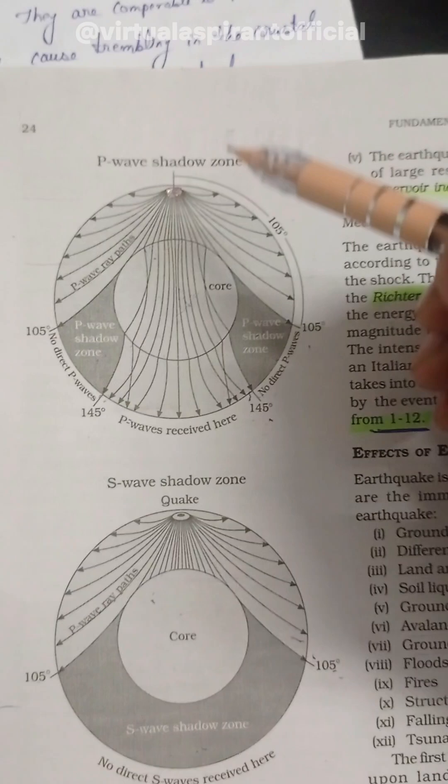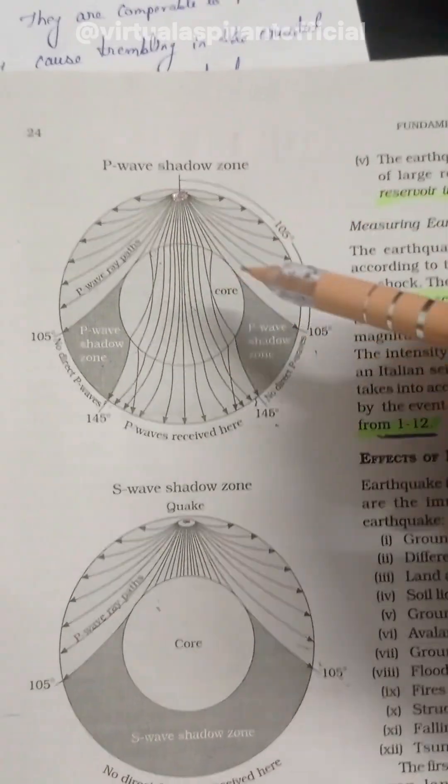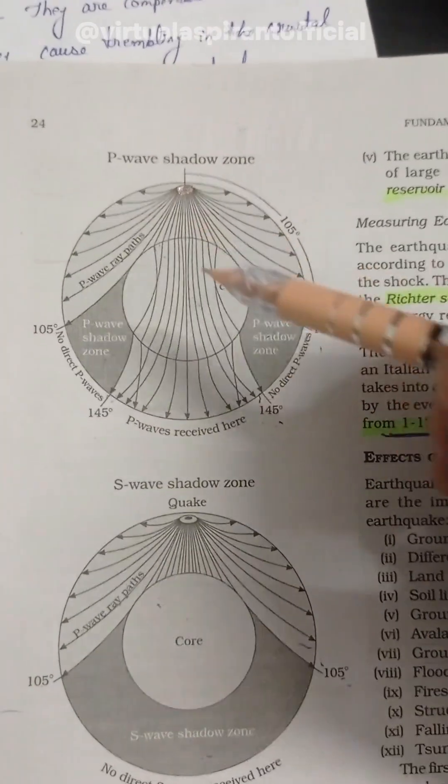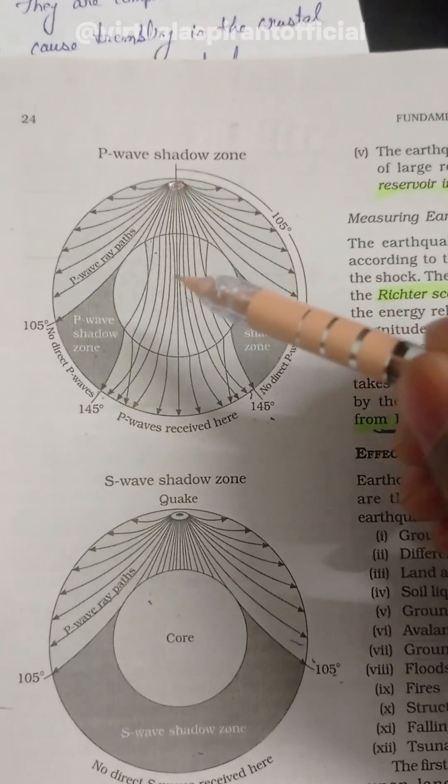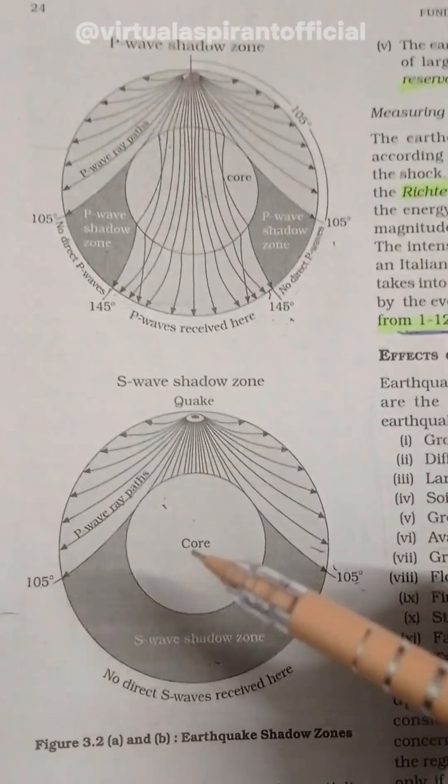These waves emerge from the focus, travel inside the body of the earth, and hence these waves are called the body waves. Majorly there are two body waves: primary wave and the secondary wave. Let's talk about first the S wave.